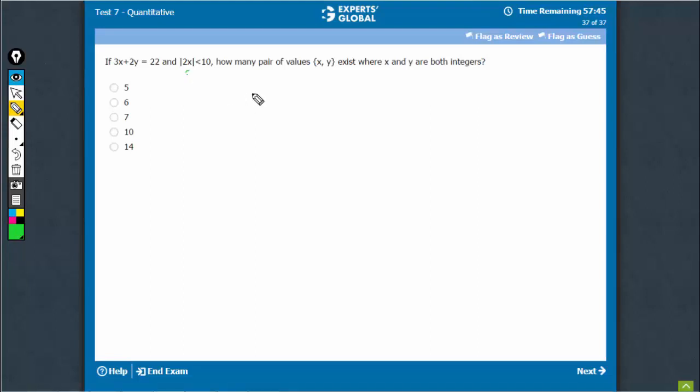Mod of 2x is less than 10, that means x is between minus 4 and plus 4.